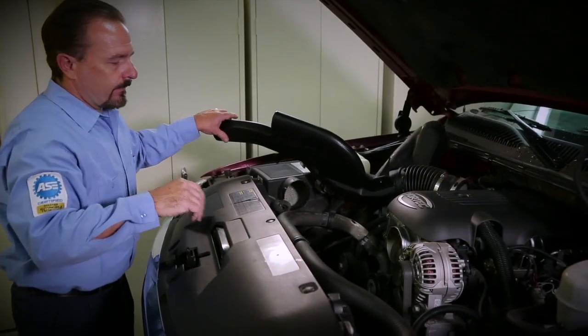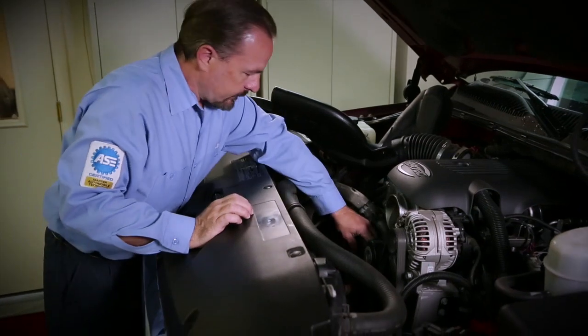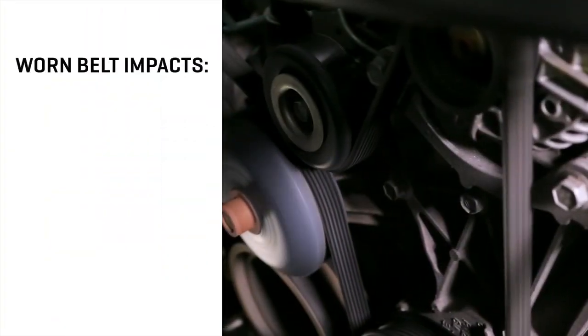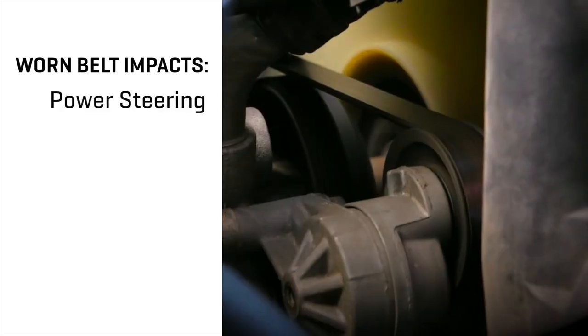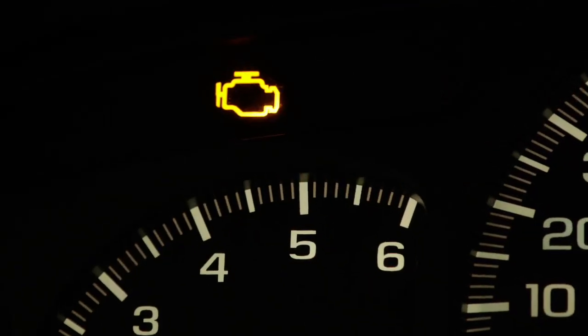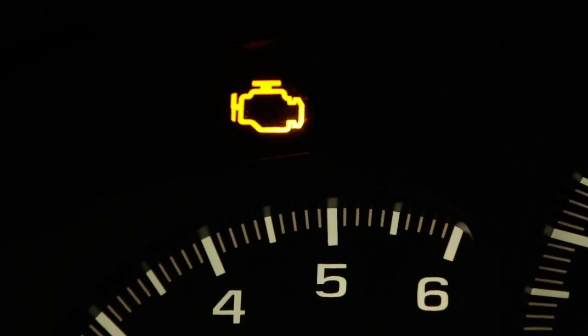Preventive maintenance is key to helping your customers from getting stranded. A worn serpentine belt impacts the critical belt drive accessory functions, such as power steering, engine cooling, and charging systems. A slipping belt can mean the loss of these essential vehicle functions.